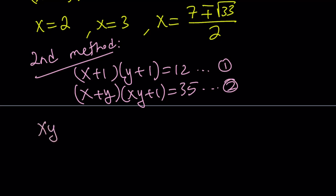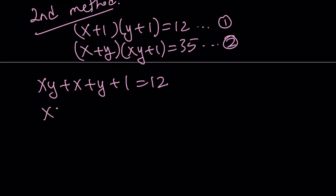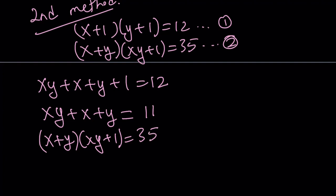And this gives me xy plus x plus y plus 1 is equal to 12. If you subtract 1 from both sides, you get xy plus x plus y is equal to 11. I'm going to go ahead and write down the second equation one more time. And then treat this as a system again. But this time, it is a different type of system.